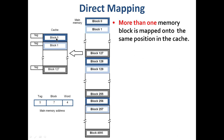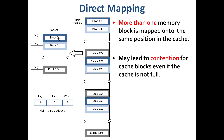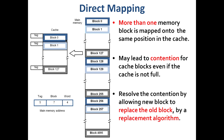In a cache location, multiple main memory blocks — such as 0, 128, 256 — are mapped to the same block. If a block is already occupying that cache location, there is a contention problem. When block 128 needs to be placed but block 0 already occupies that location, there is no space. This problem is resolved by replacing the old block using a replacement algorithm.